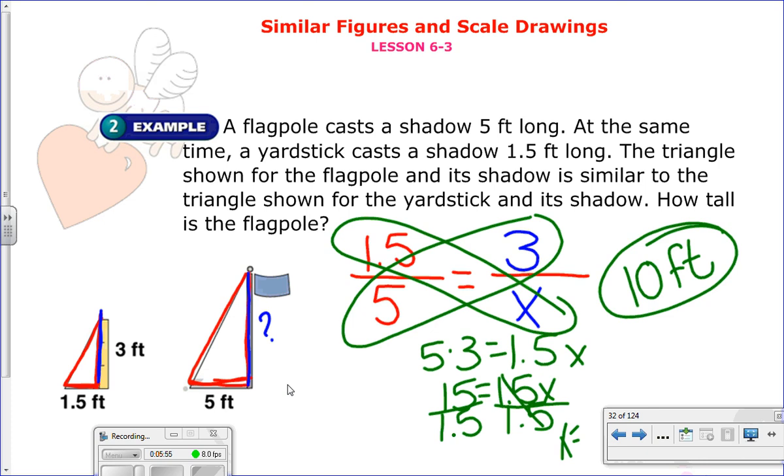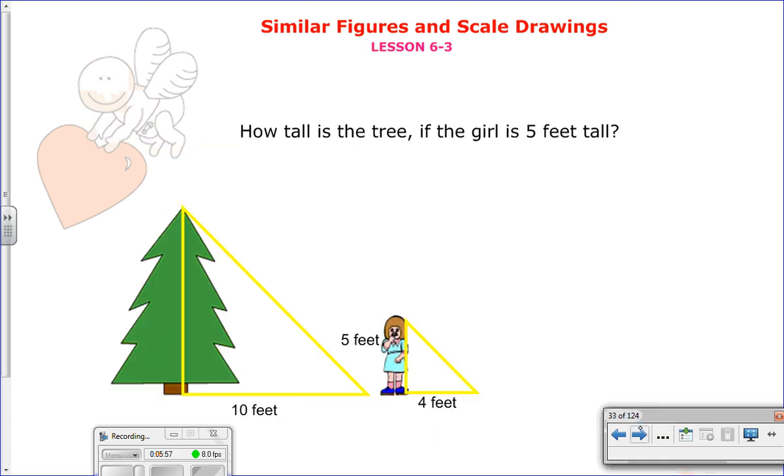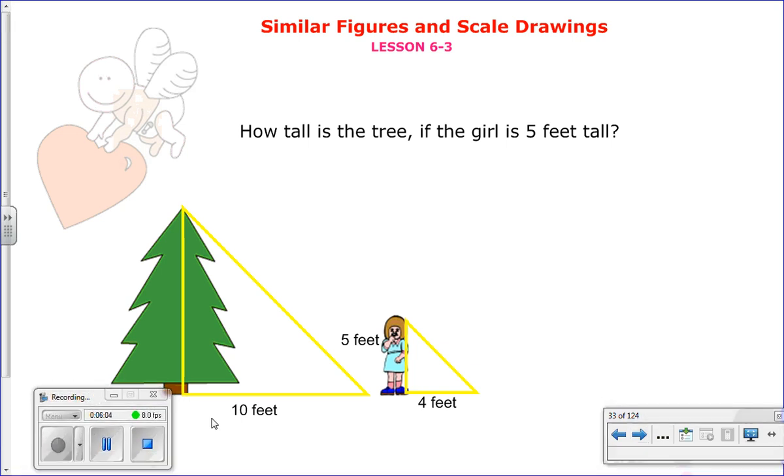Here is your next one. How tall is the tree if the girl is 5 feet tall? I want you to set this up the same way. Again, the key idea here is keep the corresponding sides together. So create a ratio with about the shadow of the tree versus girl. And then do one for the height of the tree versus the girl. So go ahead and pause me now.